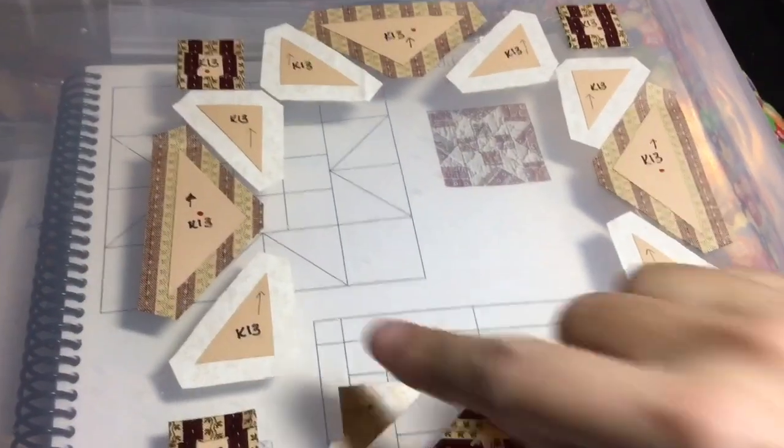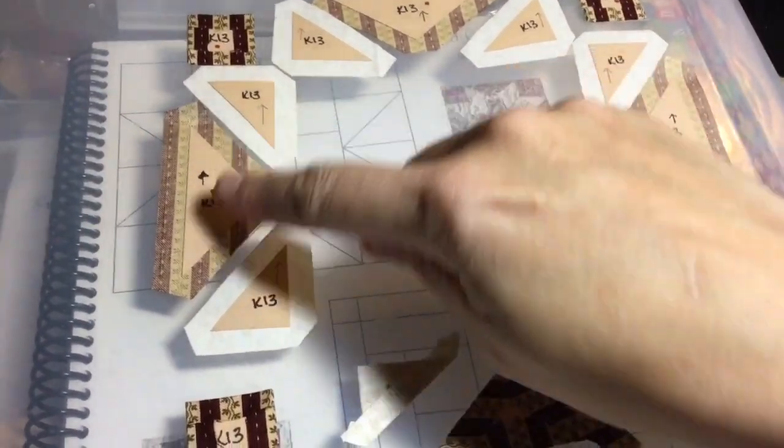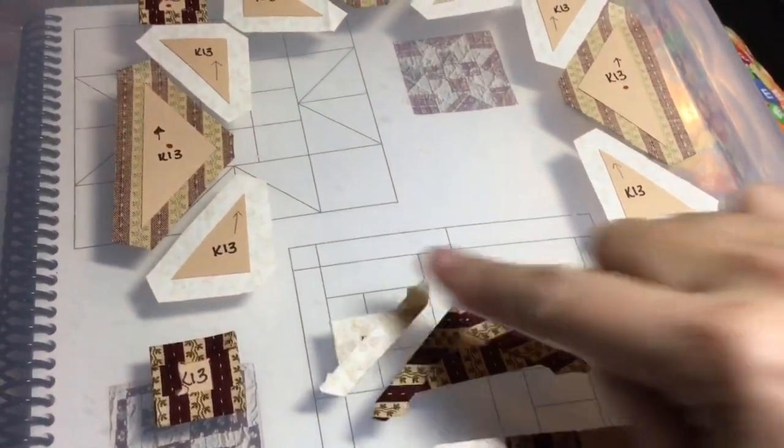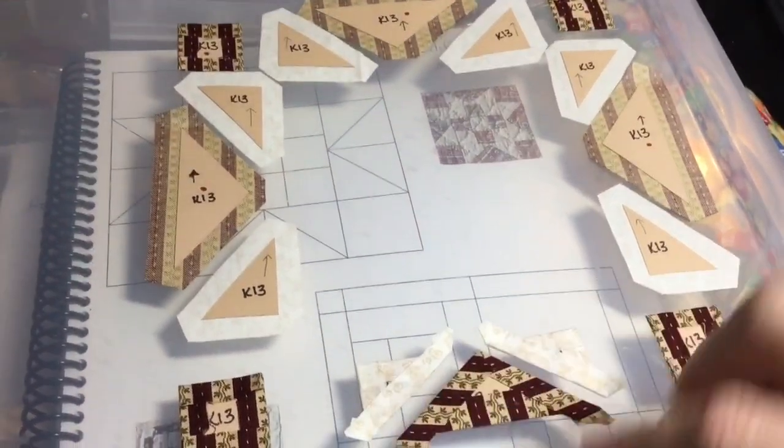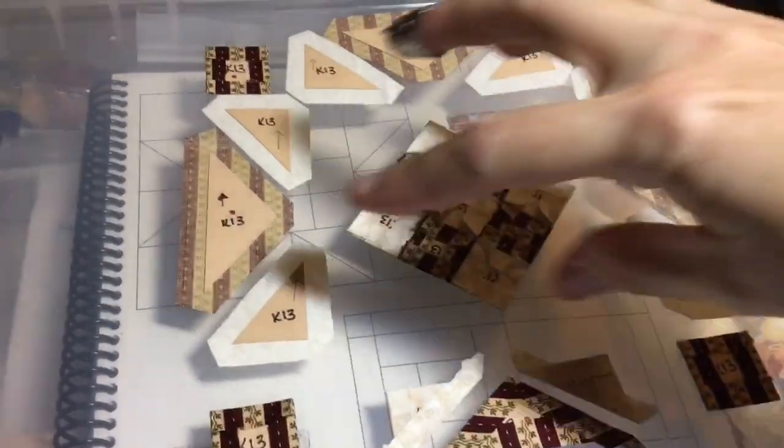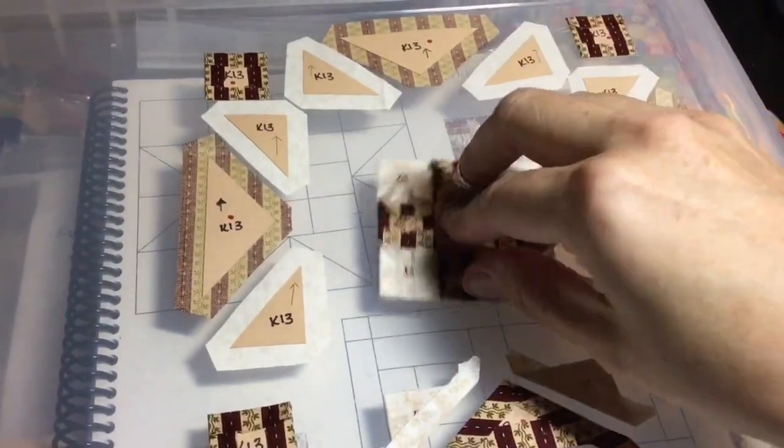So the next section is going to be to assemble these flying geese units as I have them basted here, and then I'll be able to attach those together. I'm going to assemble these and this, and attach this to my middle block.